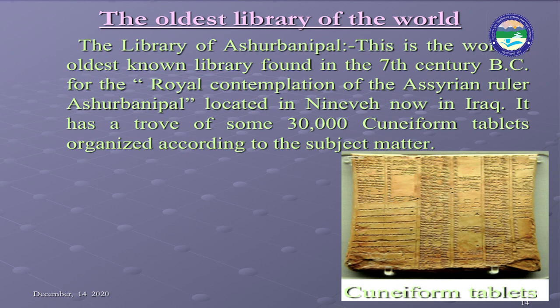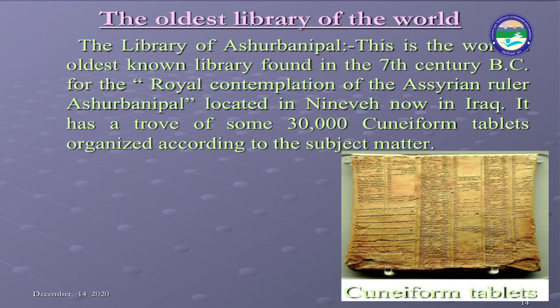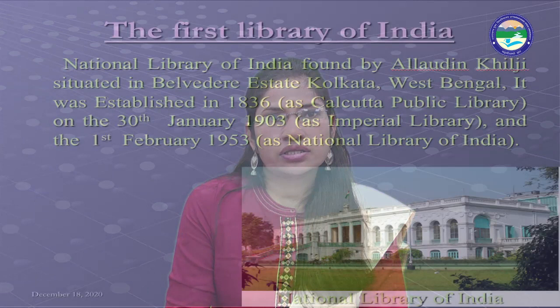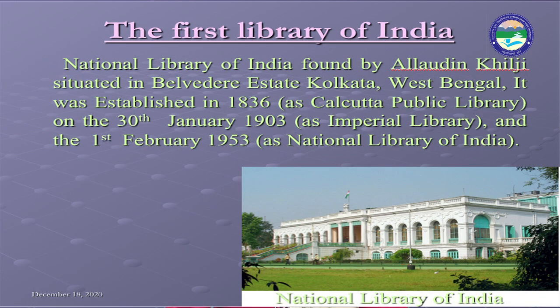The oldest library in the world is the Library of Ashurbanipal, found in the 7th century BC for the royal contemplation of the Assyrian ruler Ashurbanipal. It is located in Nineveh, now in Iraq, and has a trove of some 30,000 cuneiform tablets organized according to subject matter. The first library of India is the National Library of India, founded by Alauddin Khilji, situated at Belvedere Estate, Kolkata, West Bengal.